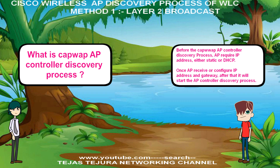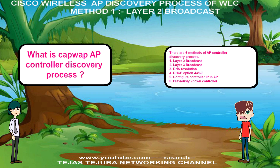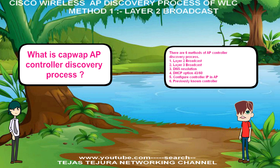There are 6 methods of AP Controller Discovery Process: 1. Layer 2 Broadcast, 2. Layer 3 Broadcast, 3. DNS Resolution, 4. DHCP Option 43 or 60, 5. Configure Controller IP in AP, 6. Previously Known Controller.